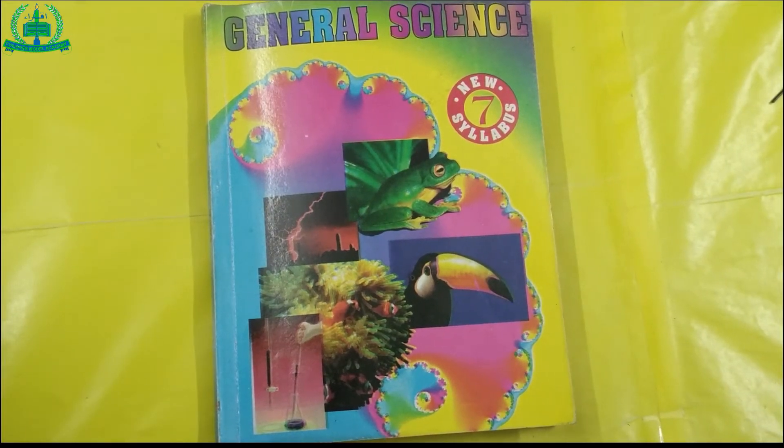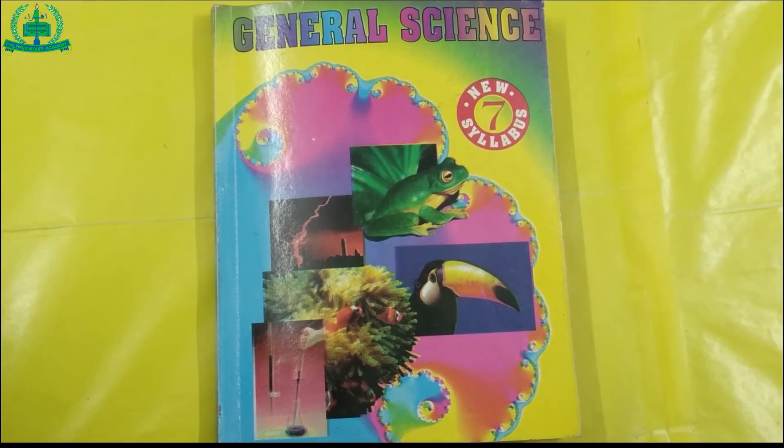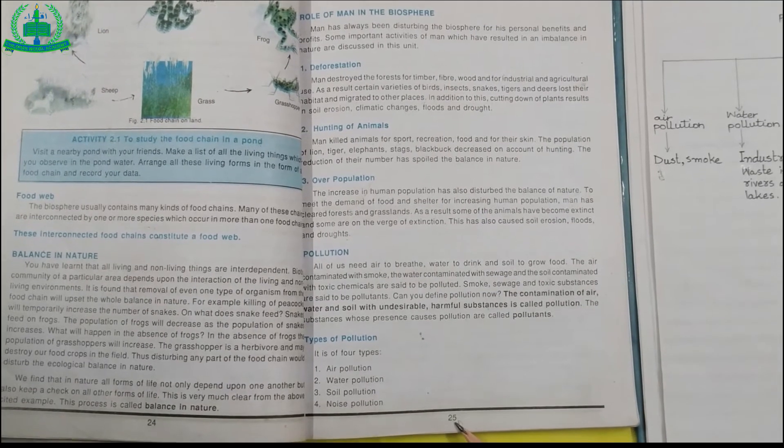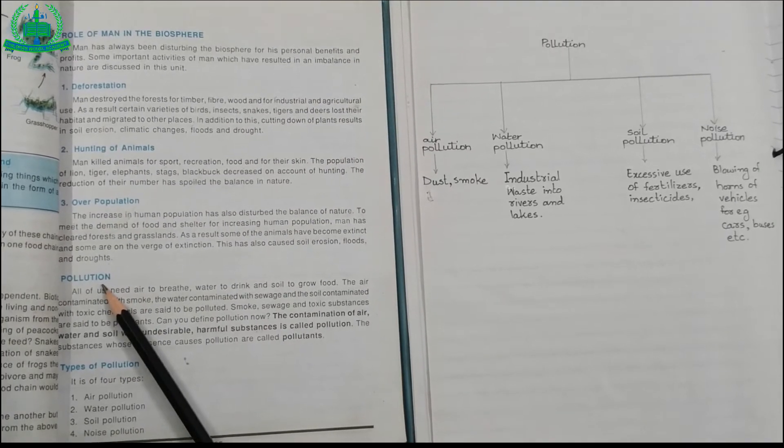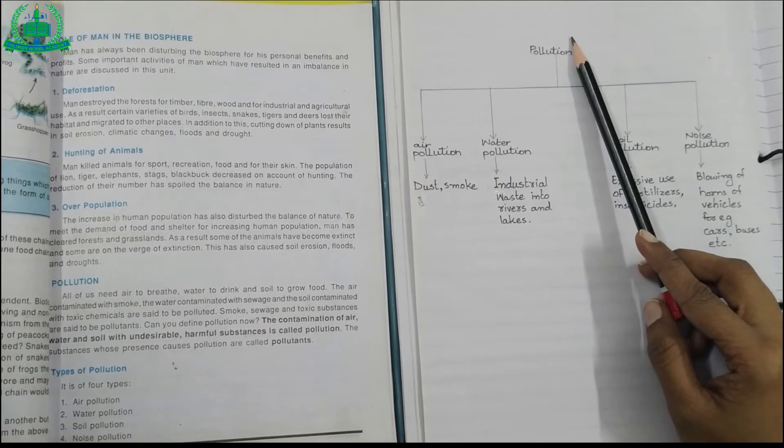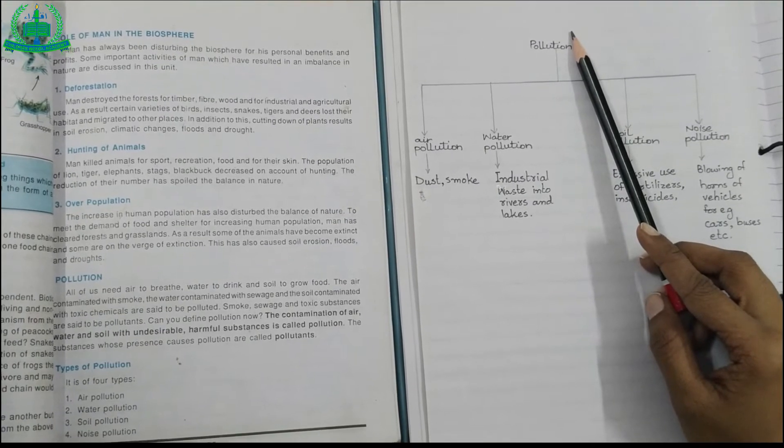Assalamu alaikum dear students, I am your science teacher for class 7th. Open your science book page number 25. Today our topic is pollution. The contamination of air, water, and soil with undesirable harmful substances is called pollution.